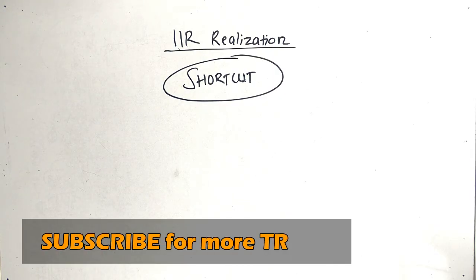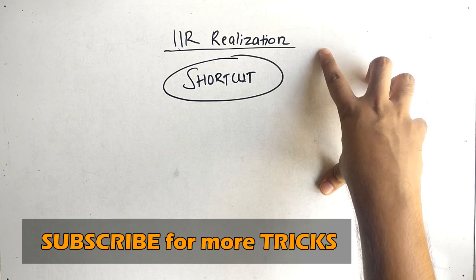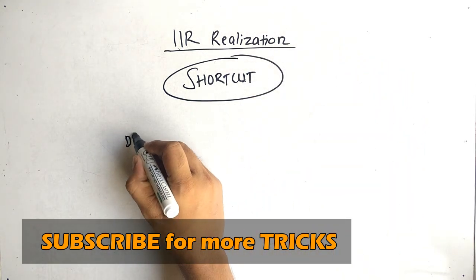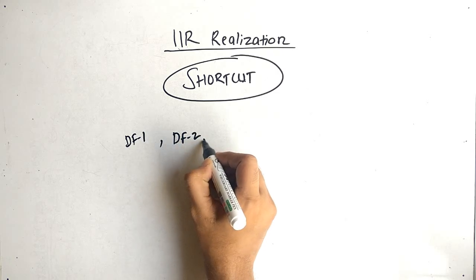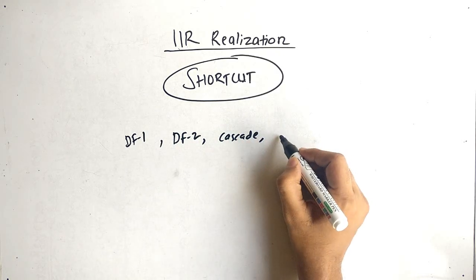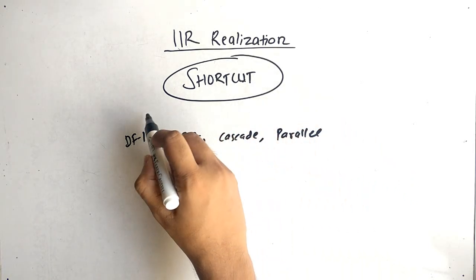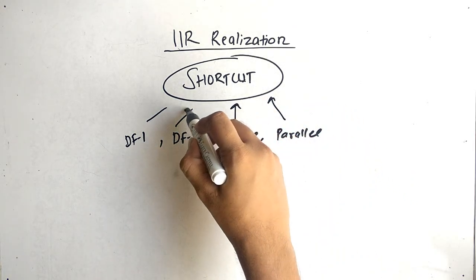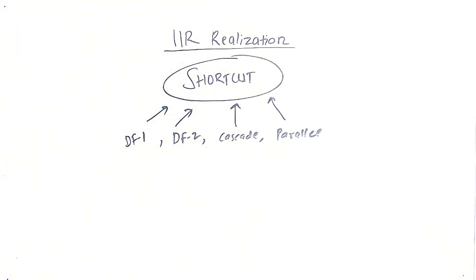The topic for today is IIR realization. We have to find direct form 1, direct form 2, cascade and parallel realization. We will use the shortcut method to find them. Let's get started.